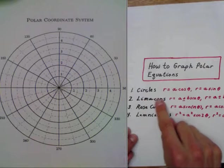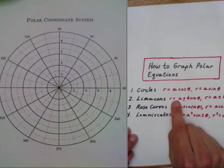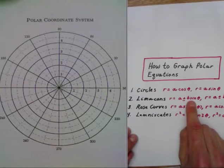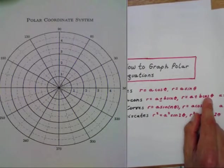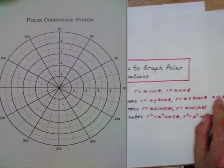Today we're going to talk about Limaçons. They're of the form r equals a plus or minus b sine theta, or r equals a plus or minus b cosine theta, and we have to remember that a and b are both greater than zero.